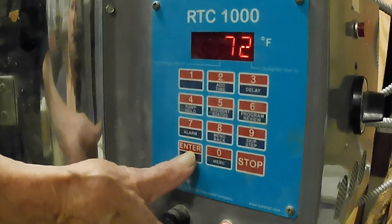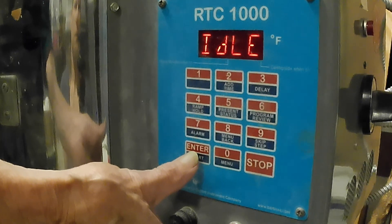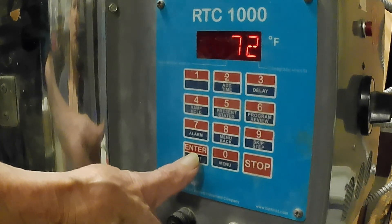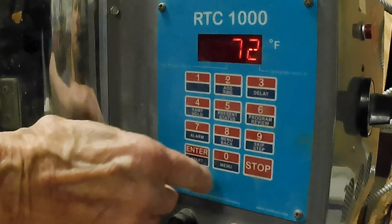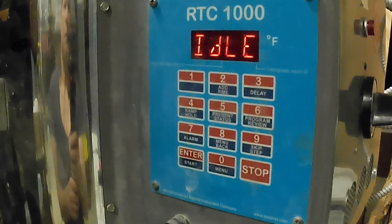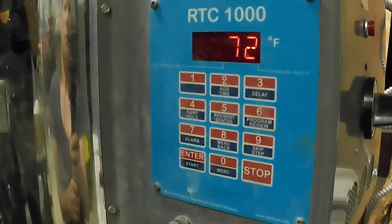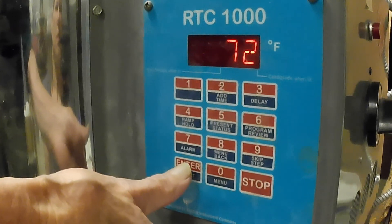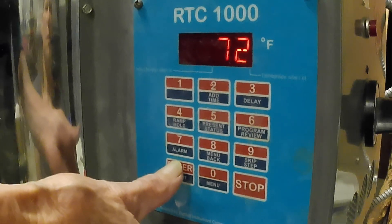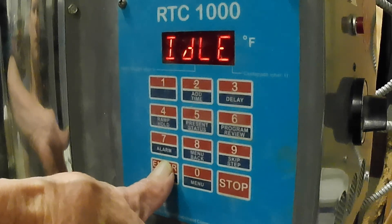We're going to look at a controller today. It's an RTC-1000 Bartlett controller. You have a panel of numbers that you have to program. We're looking for a five-step program with four holds, hold times on it. We're going to look at the controller now and then go to a graph.